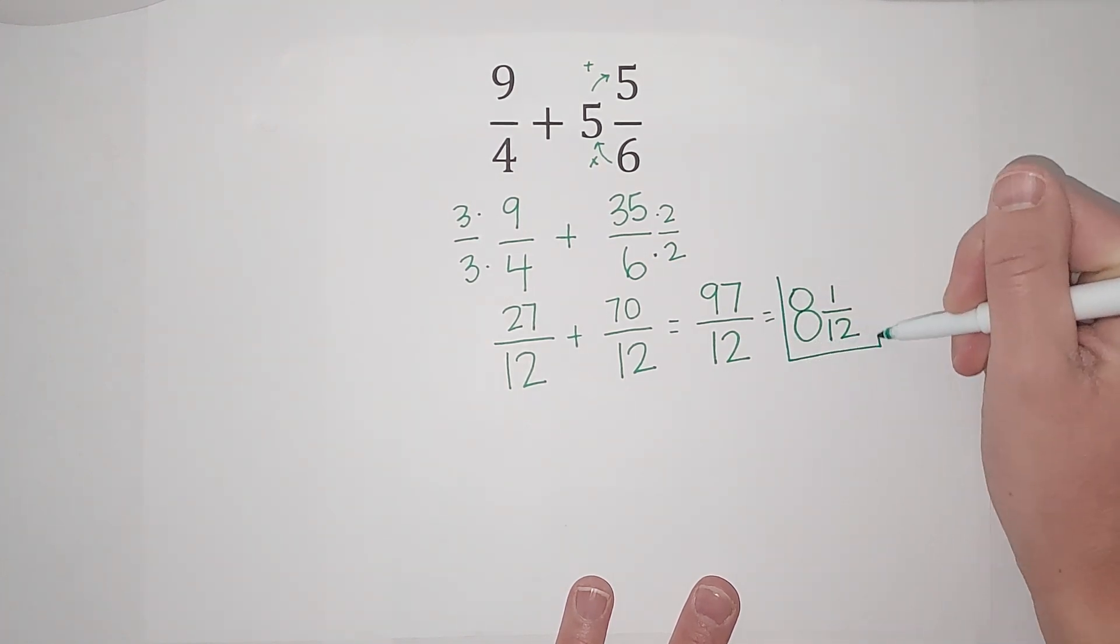But 8 times 12 is 96, not 97. So there's one left over and my denominator is still 12. So 8 and one twelfth, that's a bit easier to picture what that is than 97 twelfths, right?